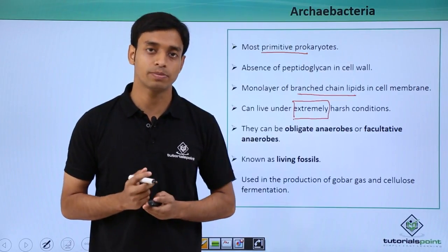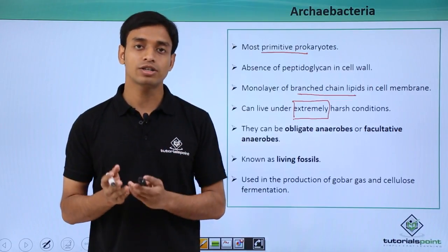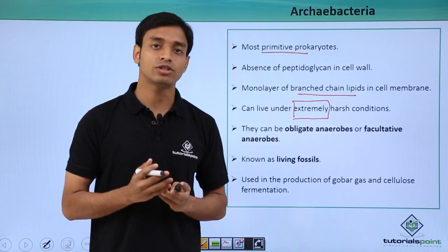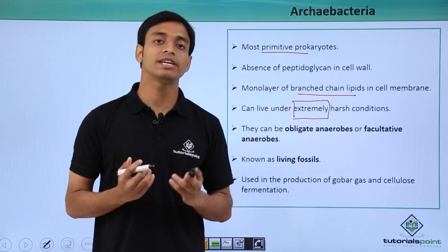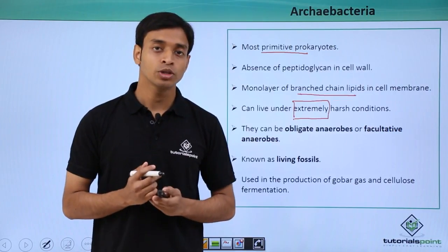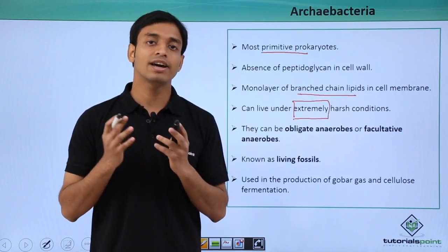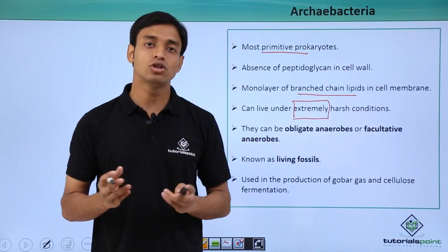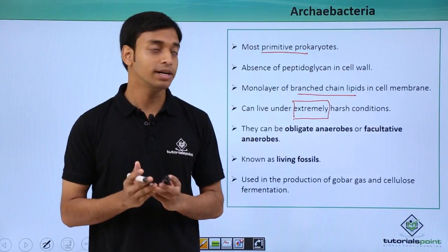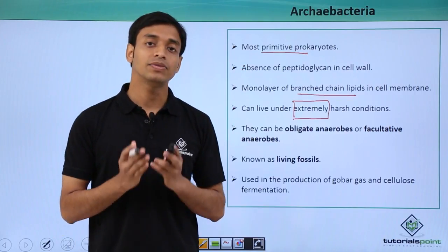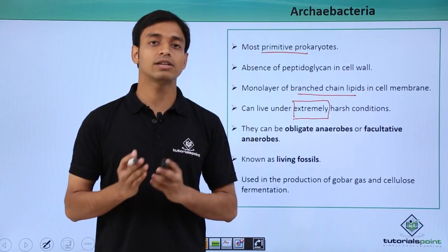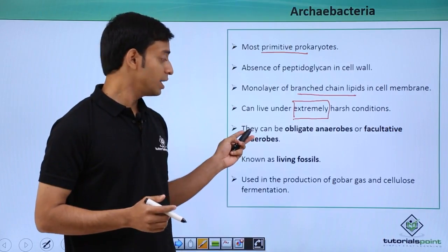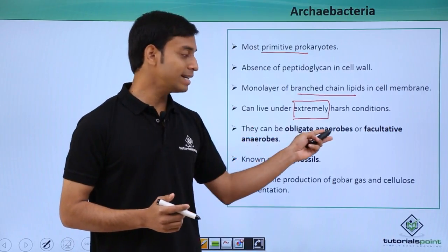Harsh conditions also include high or very low pH — pH as low as 2. These are very harsh conditions in which normally other bacteria would not survive, but Archaebacteria can easily survive in these types of harsh conditions.